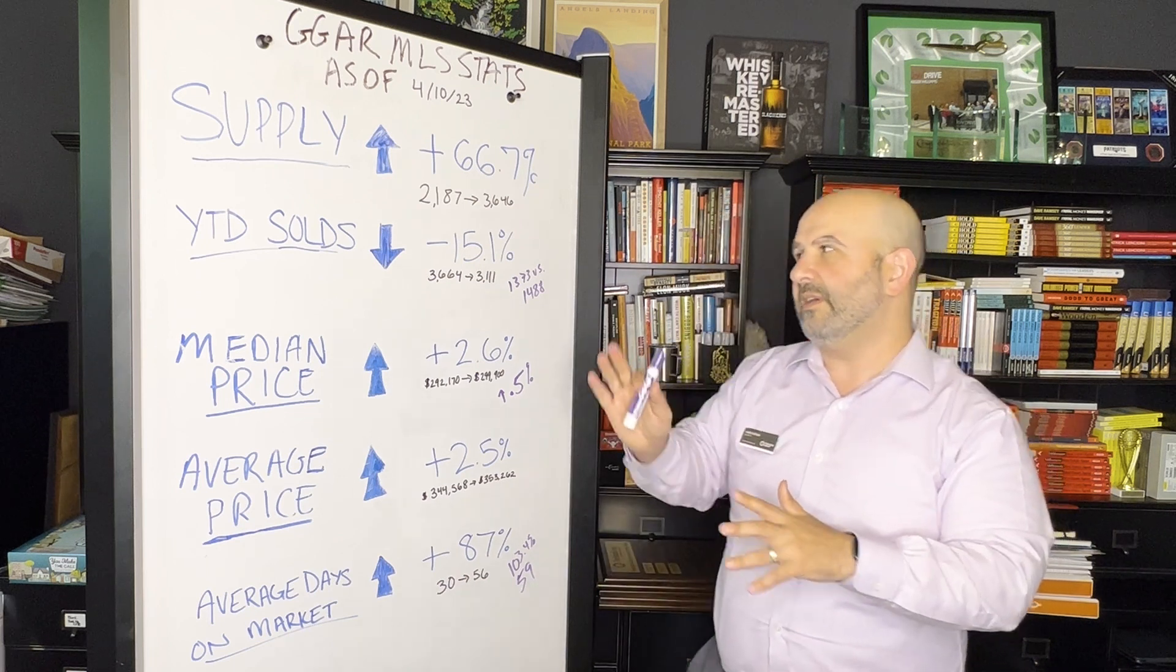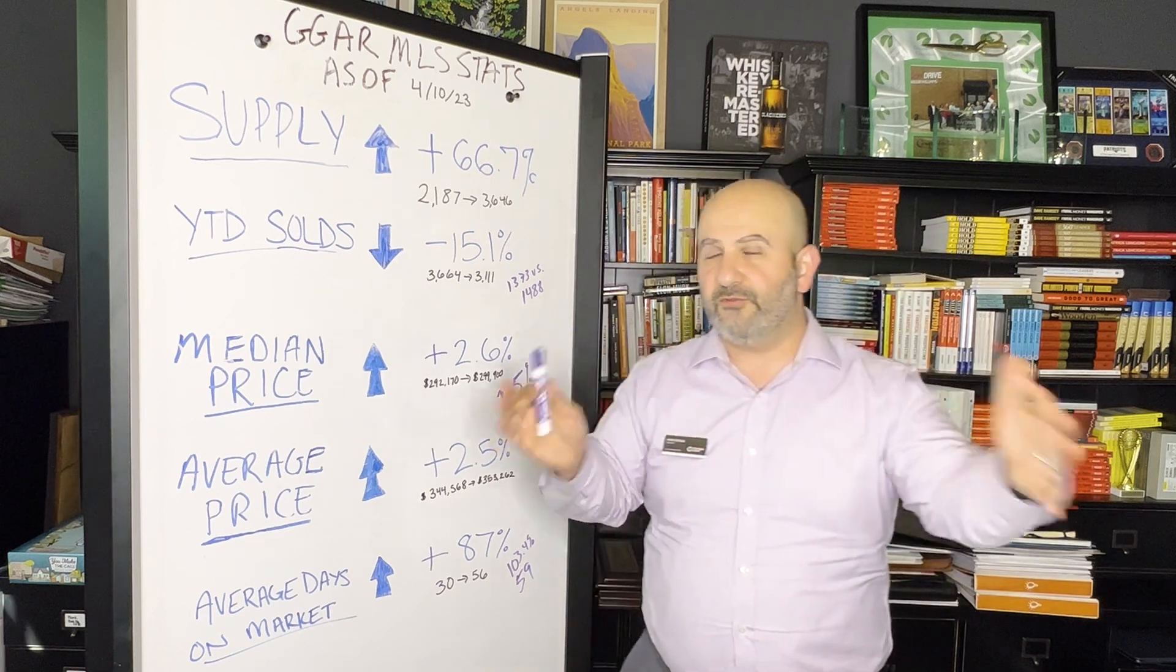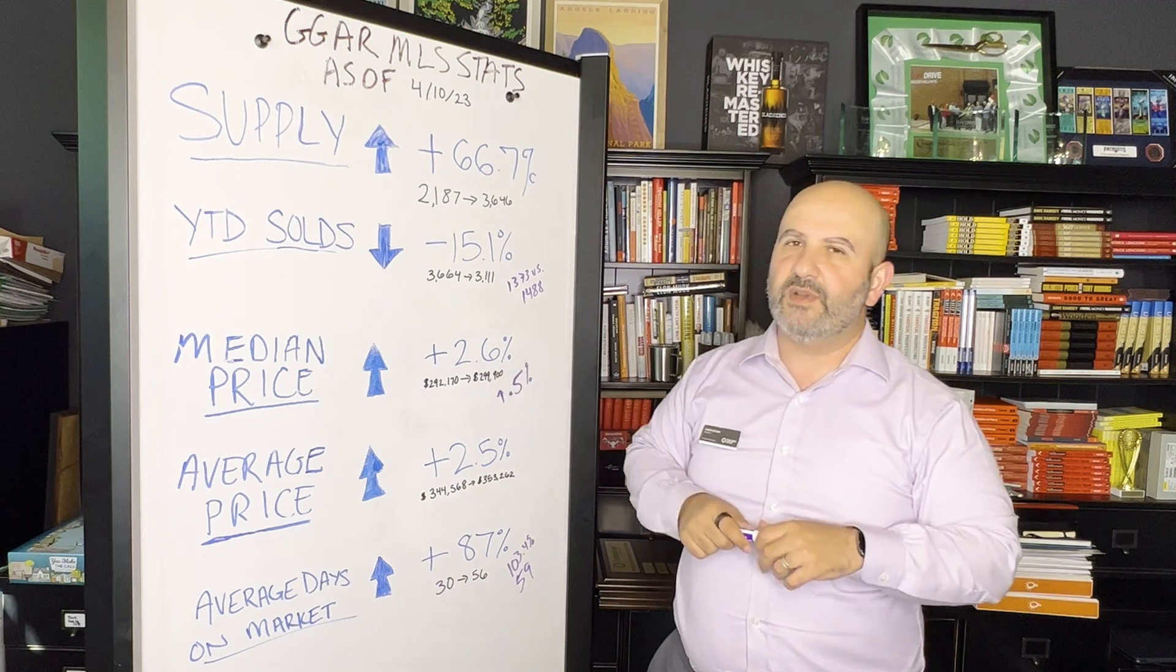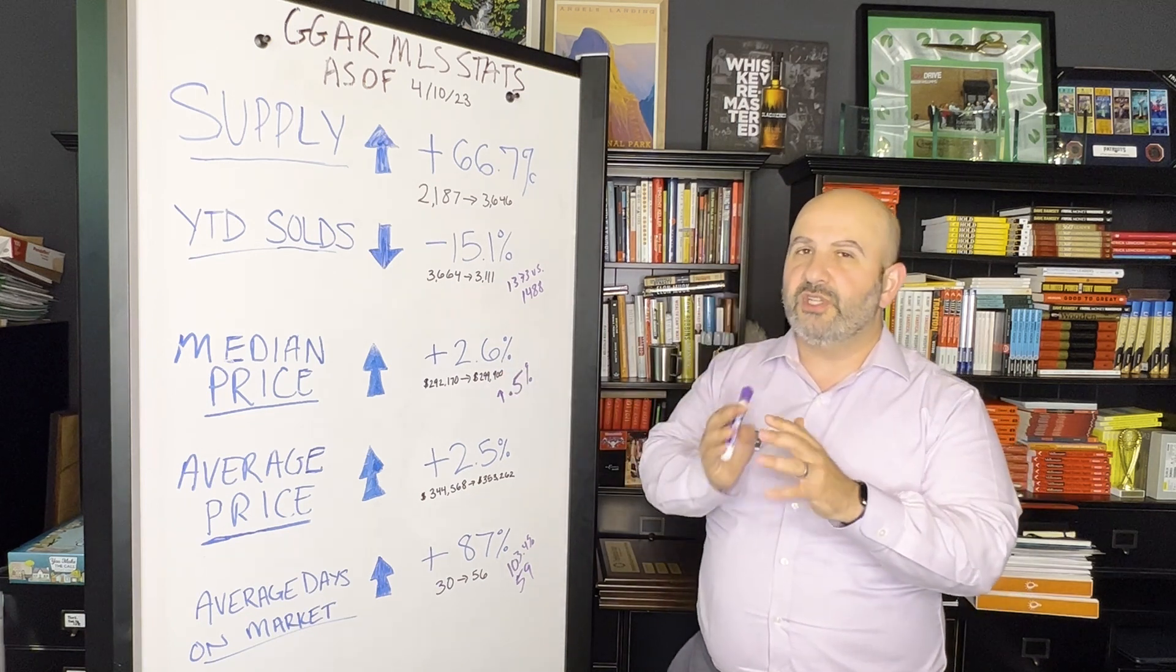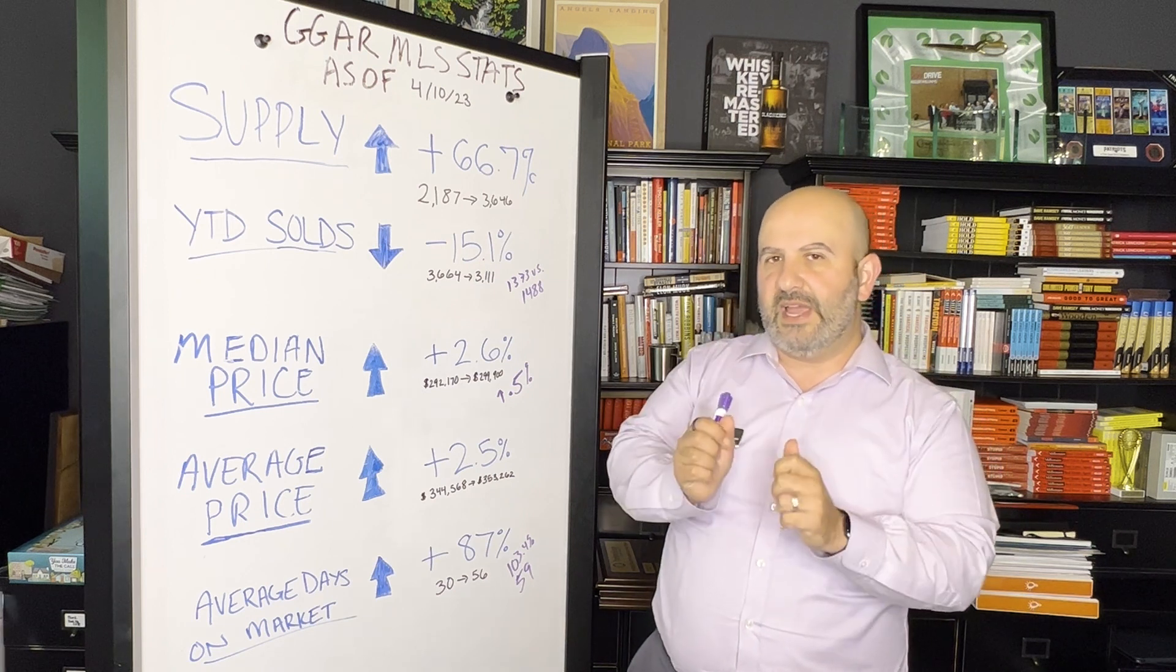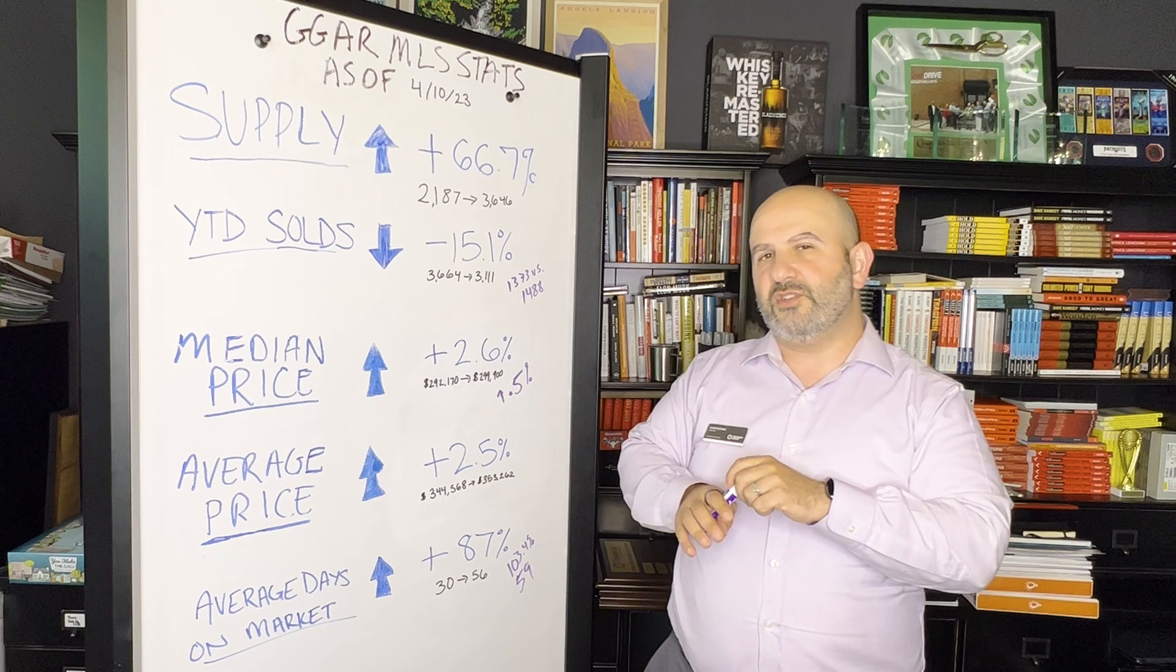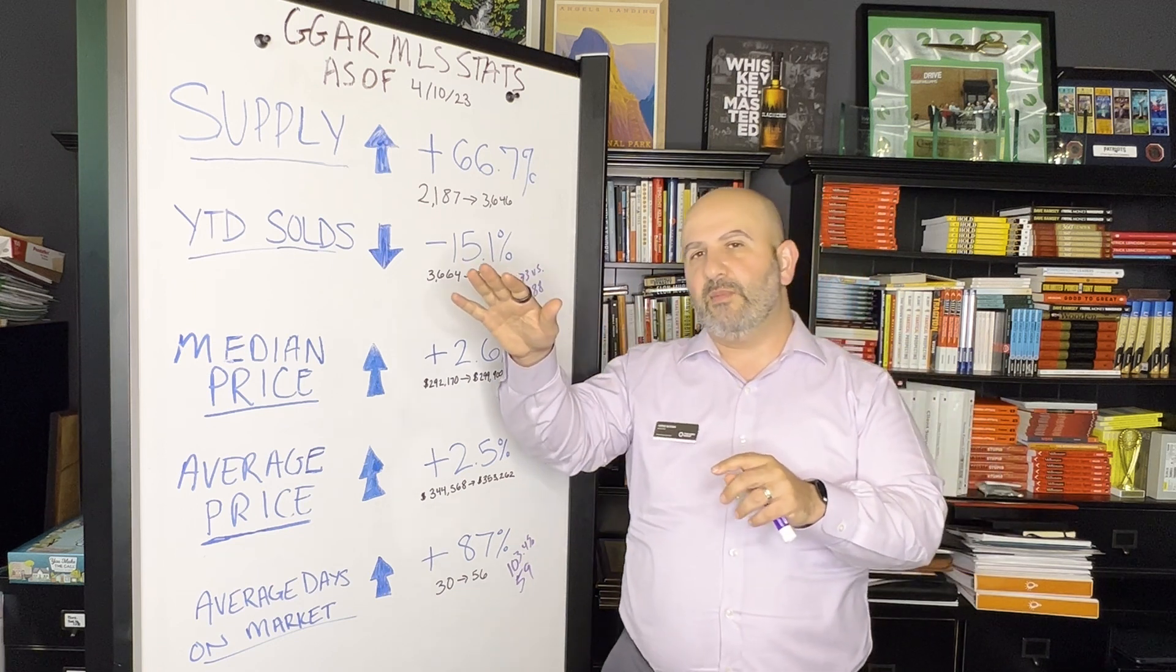Median price is up - this is again through the first few months of the year. Last year we're at $292,170, this year we're at $299,900. However, in the month of March it's only up a half a percent. So what closed in March, last year's median versus this year's median, it's only up a half a percent. So we're really seeing prices stabilize.